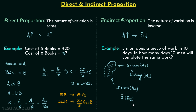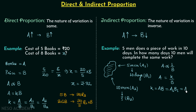Since A is increasing and B is decreasing, we have indirect proportion. For indirect proportion, A is proportional to 1 over B. Removing the proportionality sign and multiplying by constant K, we get K = A multiplied by B. This remains constant, so a1 × b1 = a2 × b2.